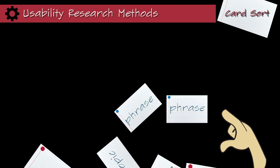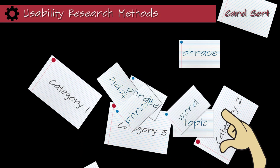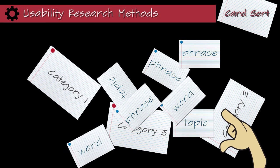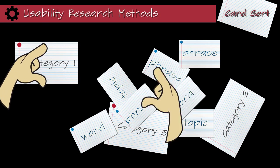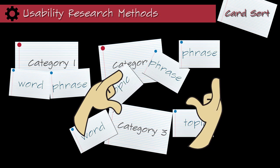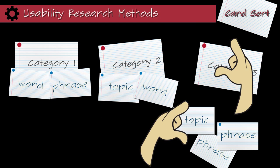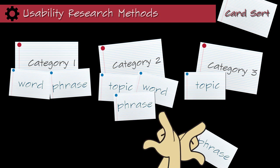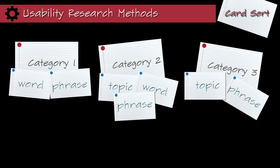Card sort testing uses paper cards and is one of the earliest types of usability research methods. Written on each one is a topic, phrase, or word, and participants organize the cards into categories, which helps determine your design or evaluate your website's information architecture.